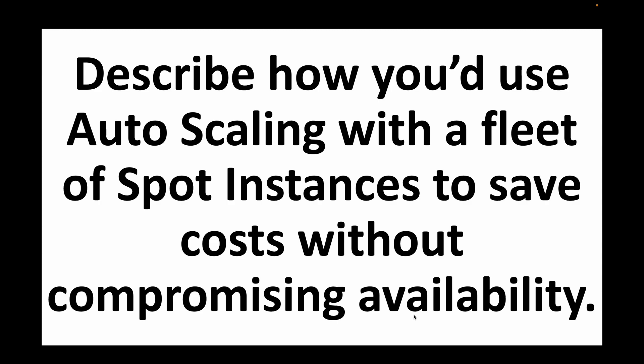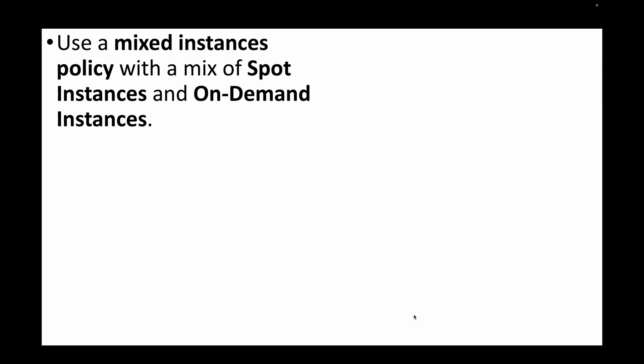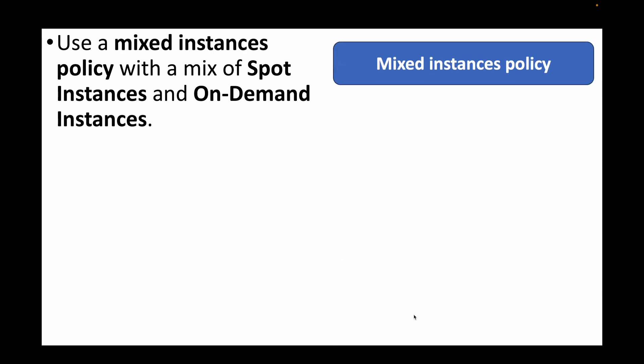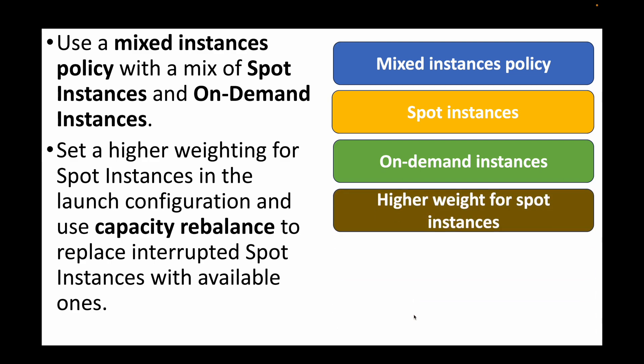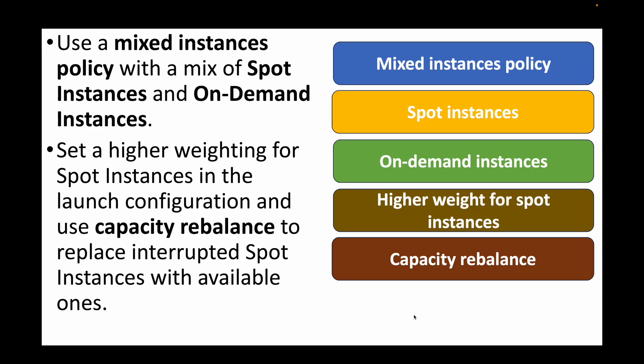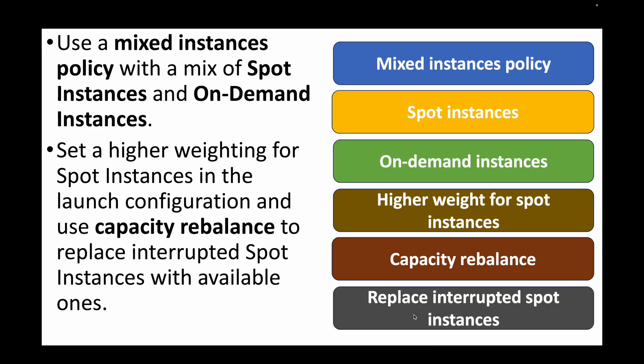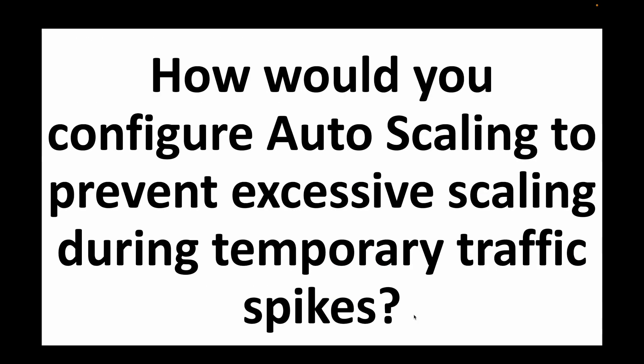The next question: how would you use auto scaling with a fleet of spot instances to save costs without compromising availability? For this we use a mixed instances policy combining spot instances and on-demand instances, setting higher weighting for spot instances in the launch configuration. We also use the capacity rebalance feature, which replaces interrupted spot instances with available ones, since spot instances don't guarantee availability and can be interrupted.